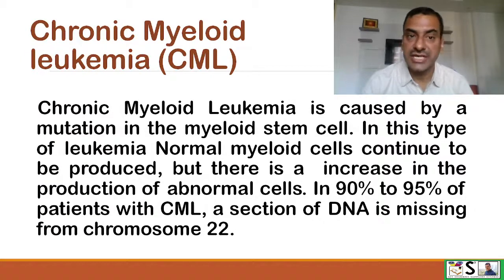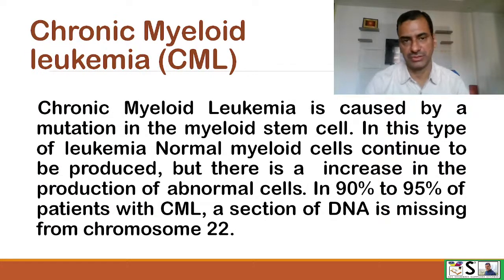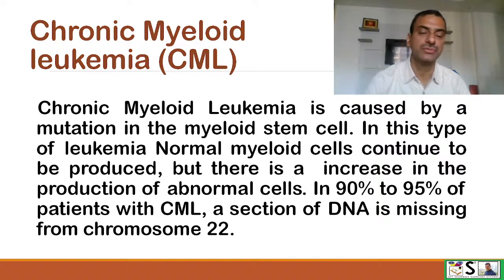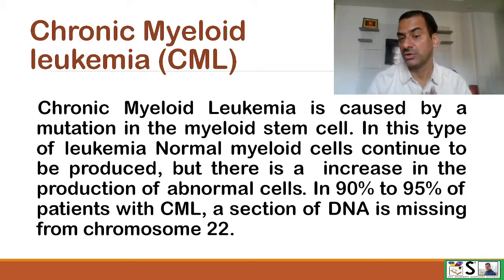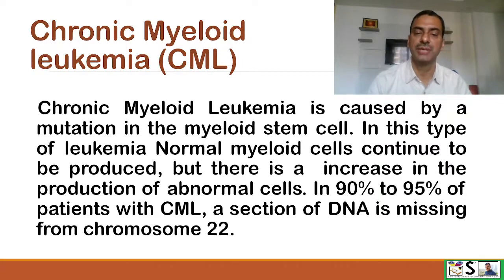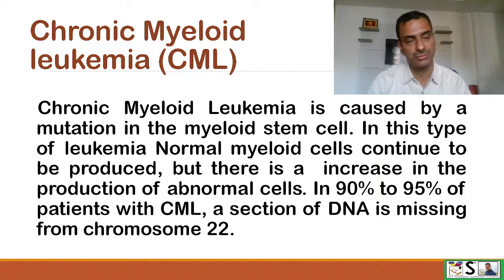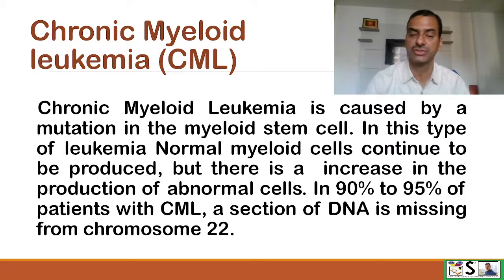The second type is chronic myeloid leukemia, or CML. CML is caused by a mutation in the myeloid stem cell. In this type of leukemia, normal myeloid cells continue to be produced, but there is increased production of some abnormal cells.